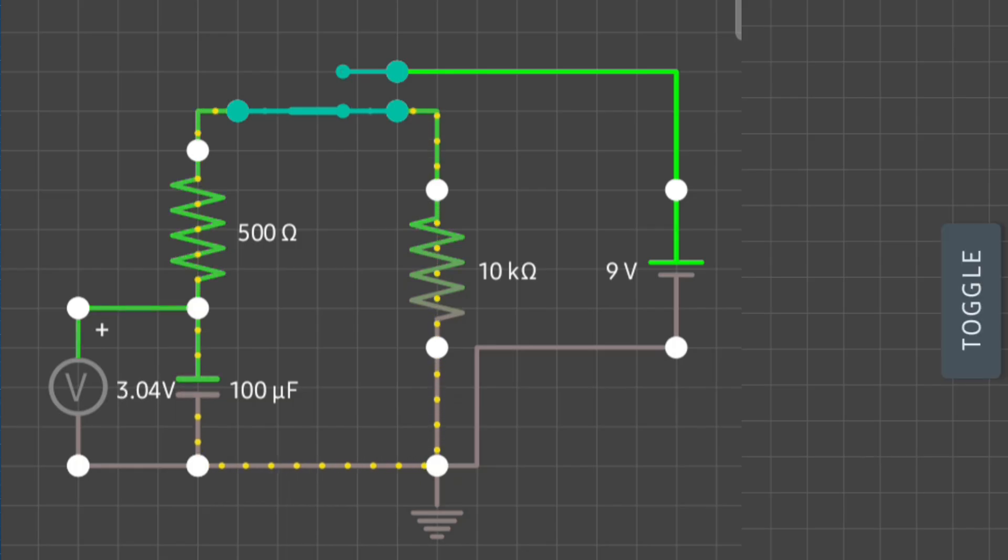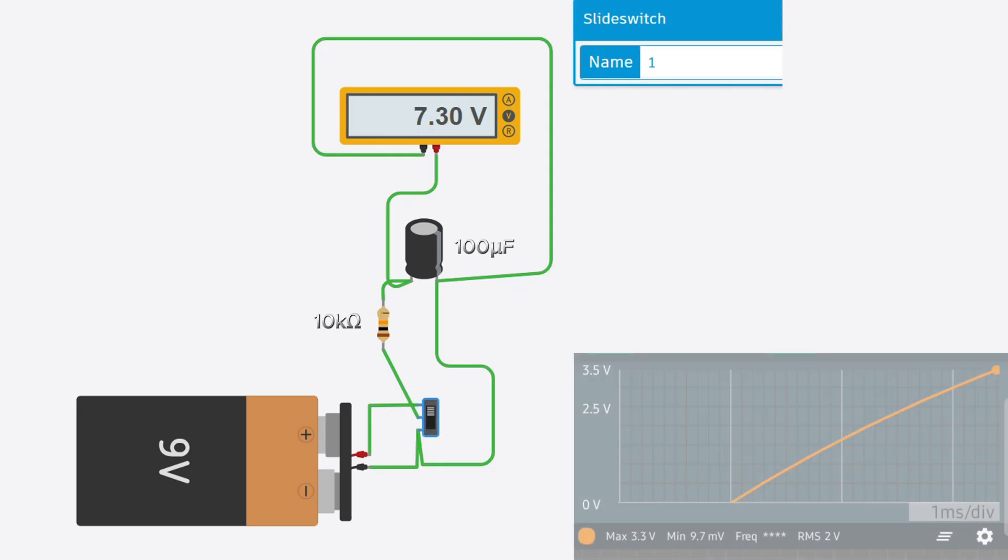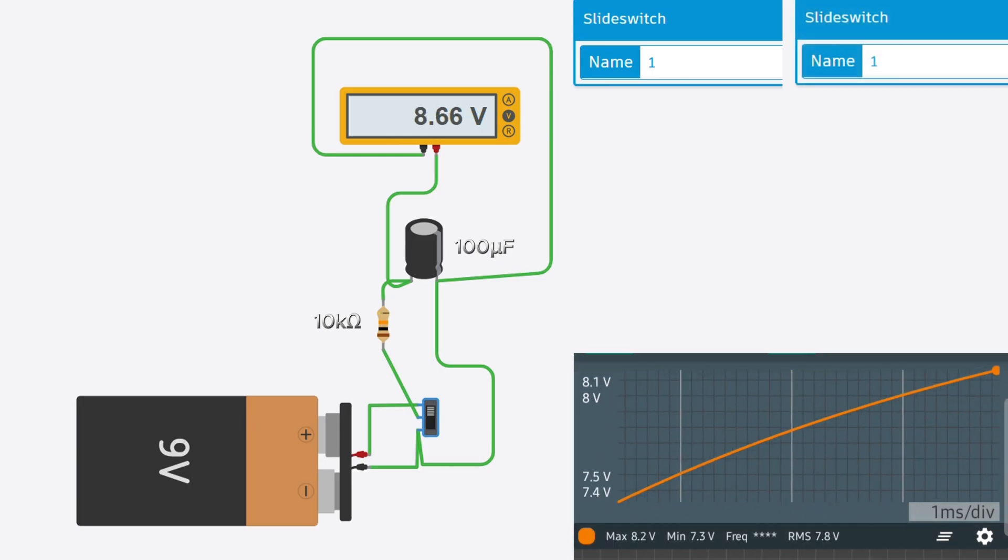Now, let's build and simulate an RC circuit in Tinkercad. We use a 10k omega resistor, a 100 microfarad capacitor, as you can see. The capacitor's voltage gradually increases, following the exponential curve we discussed earlier.